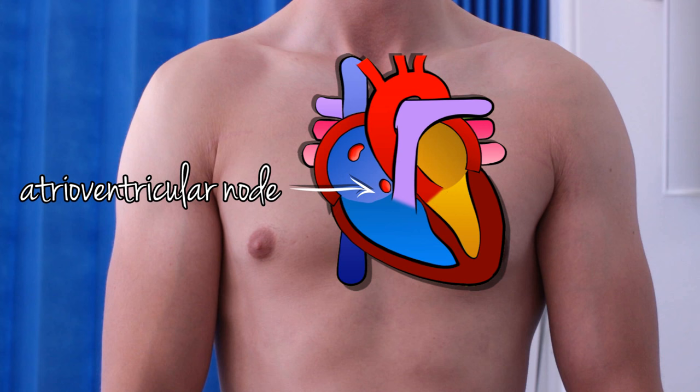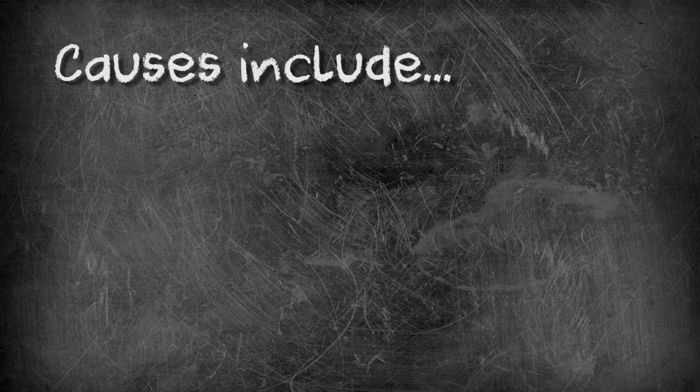Heart block is any instance where the impulse gets interrupted. Understandably, this can go wrong in several different places, and there are therefore several different kinds of heart block. For today though, we're going to be talking about atrioventricular nodal block — there's a block between the atria and the ventricles. Basically, upstairs ain't talking to downstairs no more.